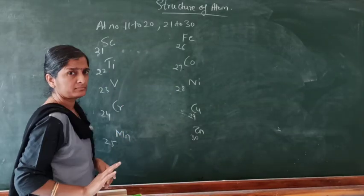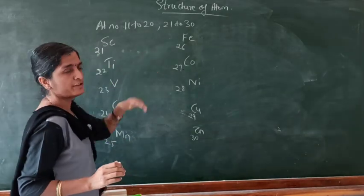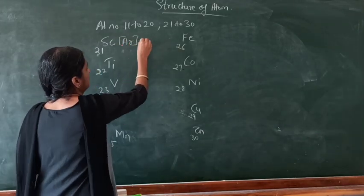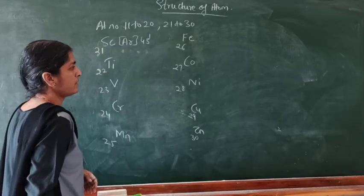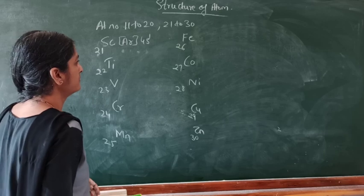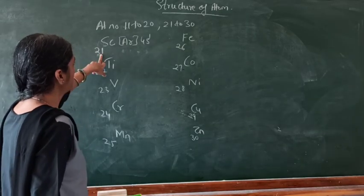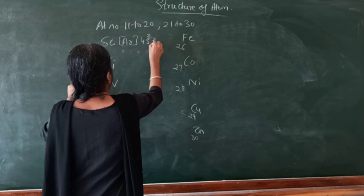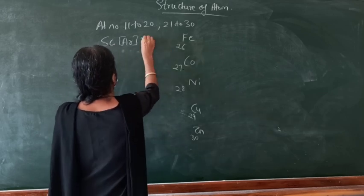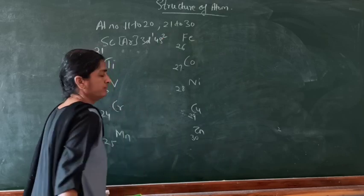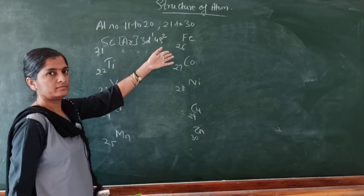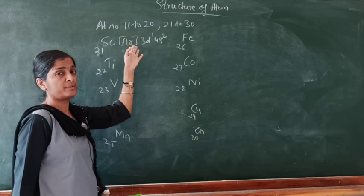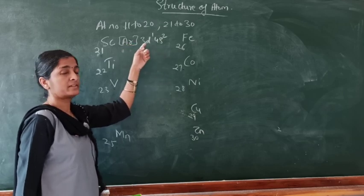Instead of writing the entire configuration, you can write [Ar] for scandium. You can write it as [Ar] 3d¹, 4s². When writing, you write 3d before 4s because 3 comes before 4, even though 4s is filled first. So scandium is [Ar] 3d¹, 4s². Next, titanium is [Ar] 3d², 4s².